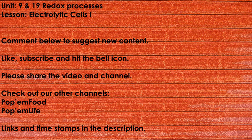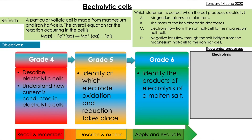Welcome back to Pop Them Up Chem. In this video we're going to be looking at electrolytic cells for the first time, which will link with voltaic cells, so make sure you watch that video first. We're going to look at how to draw electrolytic cells, how to identify where oxidation and reduction is taking place, and the products of electrolysis of a molten salt. As always, there's a question to refresh from last lesson first, so pause the video here and have a go at that.